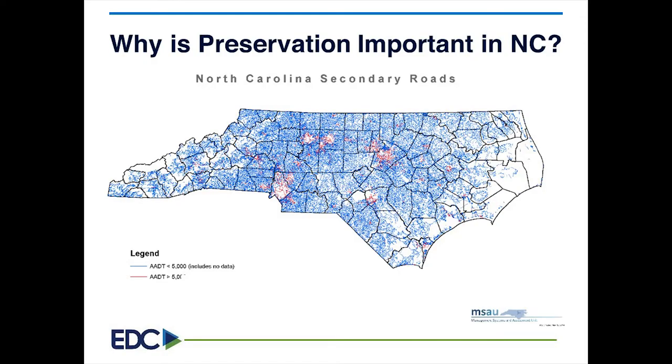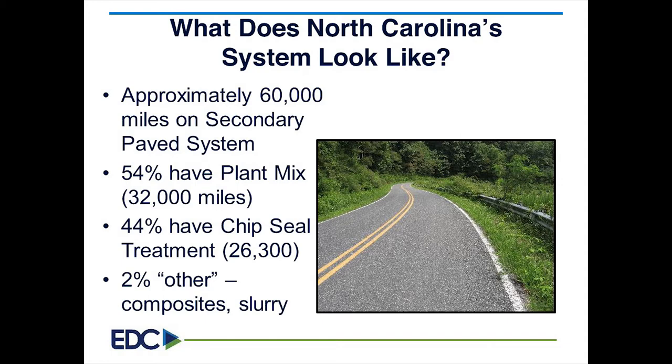I'm going to do the 'why.' All the blue on the map is everything under 5,000 ADT in North Carolina; the red is greater than 5,000 ADT. We have approximately 60,000 miles of secondary paved system—54% have plant mix and 44% have a chip seal. Bottom line: we've got to have chip seal as a tool in the toolbox. We can't put hot mix on 80,000 miles of system. We maintain 80,000 centerline miles—second only to Texas—as there is no county system in North Carolina.